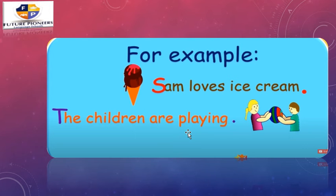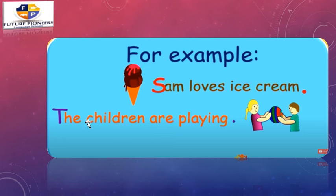Where is the subject and where is the verb? The children are playing — this sentence is about the children and they are playing. So 'the children' is the subject. What about the verb? Yes, 'are playing' is the verb. That's correct, guys.